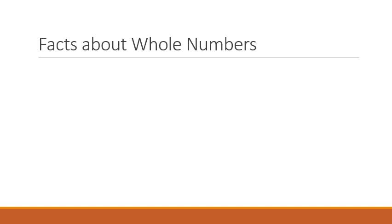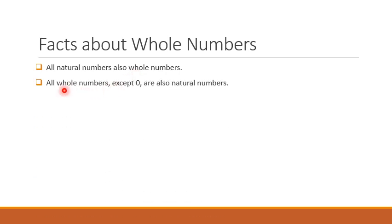Now let's understand a few facts about whole numbers. All the natural numbers are also whole numbers, because we have defined whole numbers as zero along with the natural numbers. All the whole numbers except zero are natural numbers. So we can say all natural numbers are whole numbers, but all whole numbers are not natural numbers.